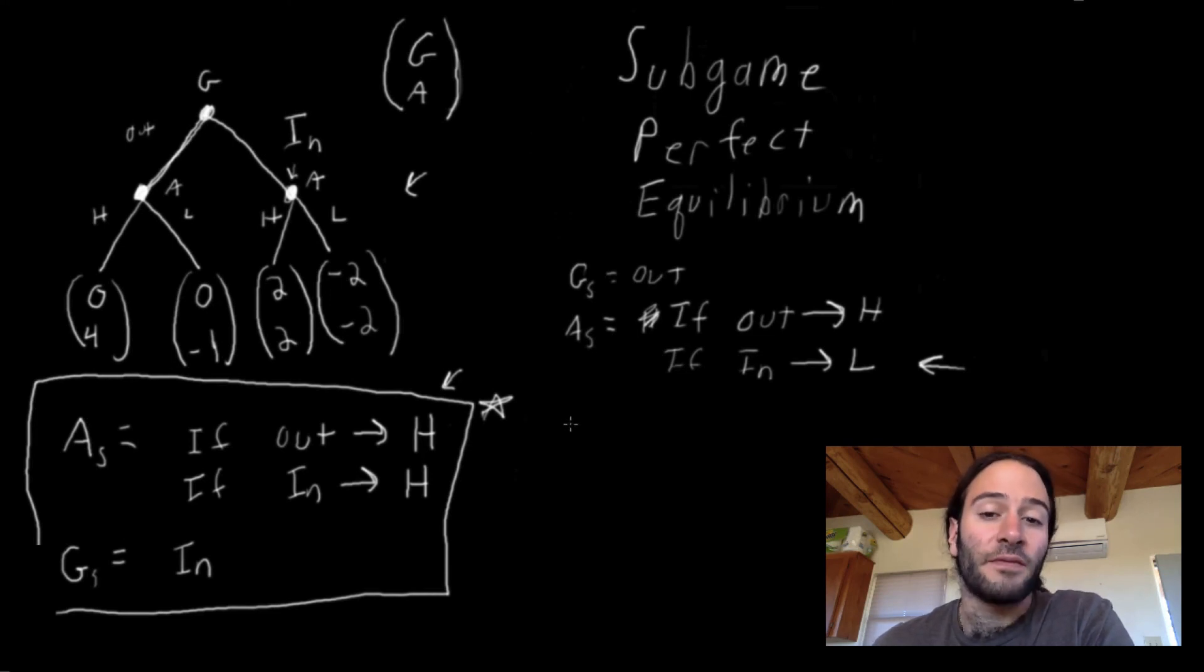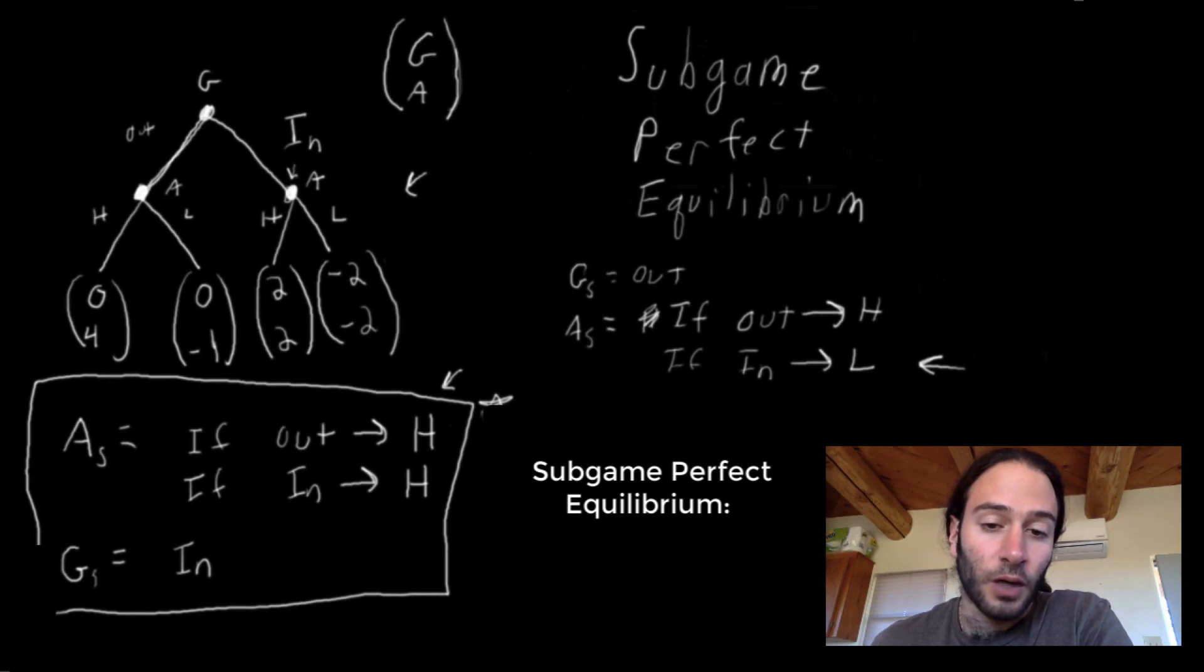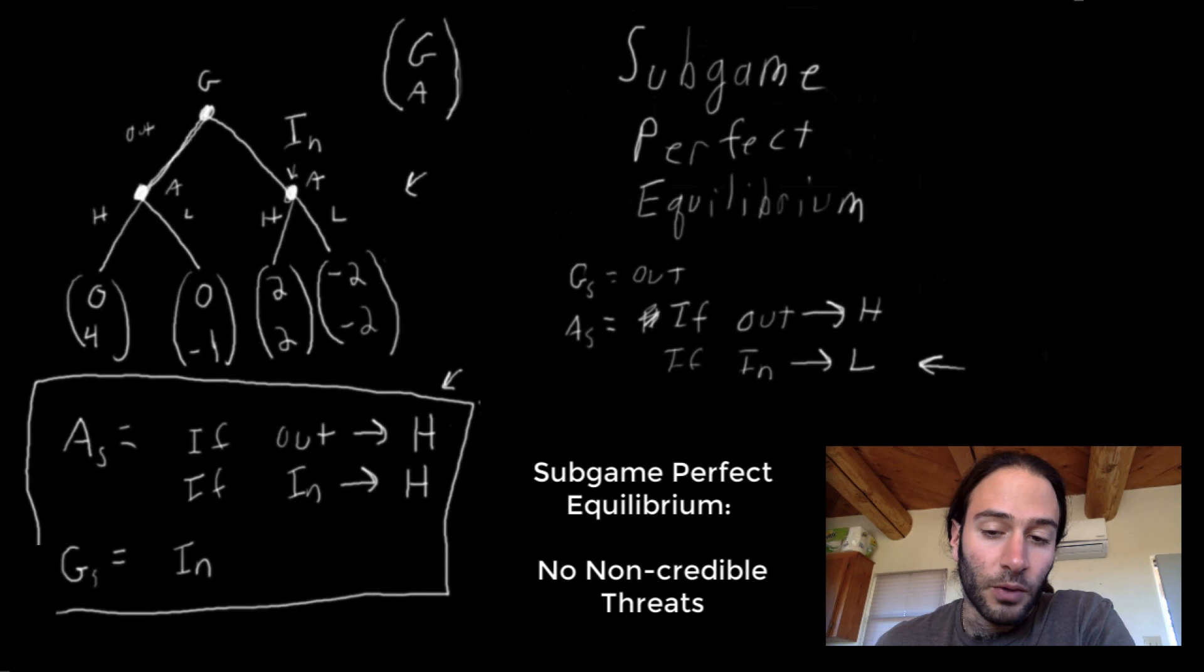But we have this other condition that Apple is always best responding, conditioned on it reaching each of its decision nodes, and therefore we have a subgame perfect equilibrium. So this strategy is what we would call a subgame perfect equilibrium, and it is a strategy in which there are no non-credible threats.